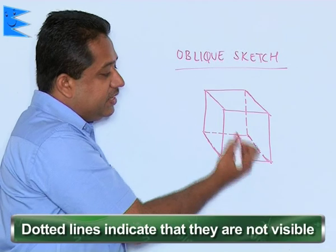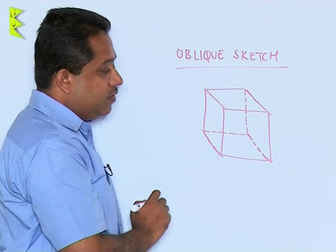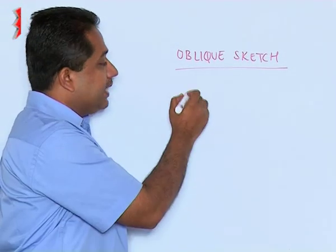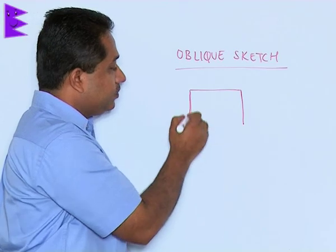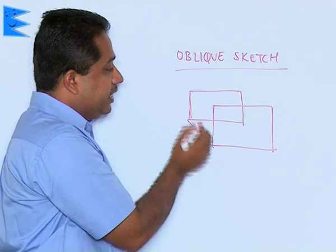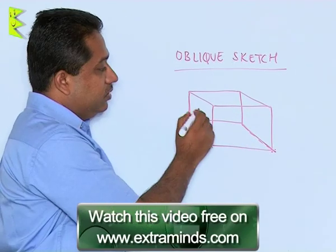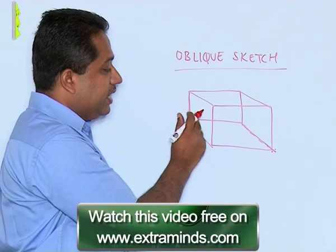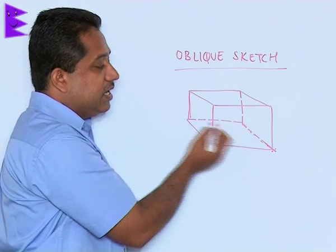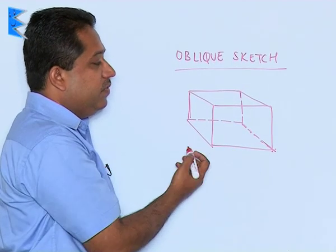These dotted lines indicate that those edges are not visible to us. For a cuboid, the procedure is the same — only instead of two squares, we draw two rectangles. We join vertex to vertex, and the lines that are not visible, as before, are represented by dotted lines because they are behind the figure.